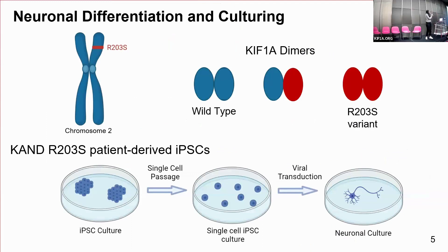So we're looking at a heterozygous variant. As Dr. Chung described yesterday, she described a dominant negative mechanism. Some variants in similar locations of KIF1A have been shown to work in a dominant negative fashion, where we have a heterozygous dimer with the blue and the red circles — blue being wild type, and red being the variant half of the dimer — which kind of poisons the wild type version. We are working with induced pluripotent stem cells that are patient-derived. I would like to thank the patient whose cells we're working with, as well as Dr. Chung's lab for making these cells available to the KIF1A community, and KIF1A.org for helping us acquire and work with these cells.